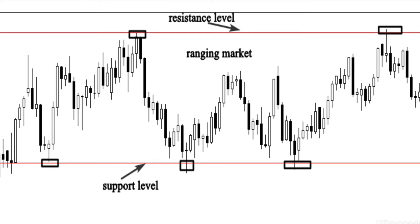Understanding the difference between both market types will help you better use the right price action strategies in the right market conditions. Trading ranging markets is completely different from trading trending markets, because when the market is ranging it creates equilibrium — buyers are equal to sellers and no one is in control. This will generally continue until the range structure breaks out and trending conditions start to organize. The best buying and selling opportunities occur at the key support and resistance levels.